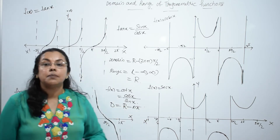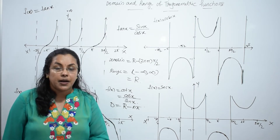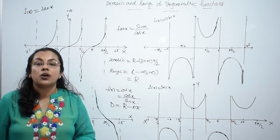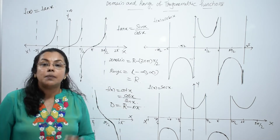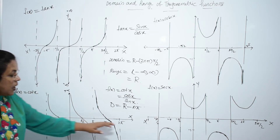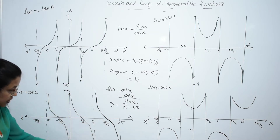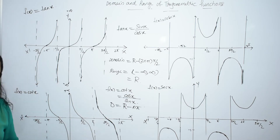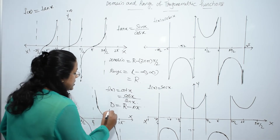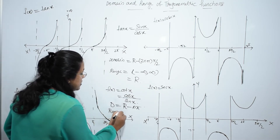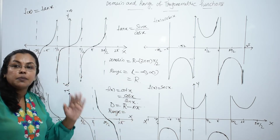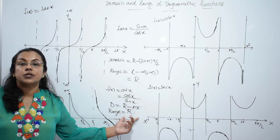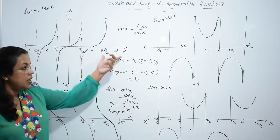So the domain of cot x is ℝ minus {nπ} — at multiples of π, the function is not defined. What about the range of the function? The y-axis gives the range, and from the graph the range is from minus infinity to plus infinity, which is the same as the set of real numbers.